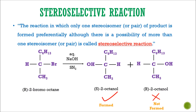Now let us understand first what is a stereoselective reaction. The reaction in which only one stereoisomer of product is formed preferentially, although there is possibility of more than one stereoisomer, is called a stereoselective reaction.